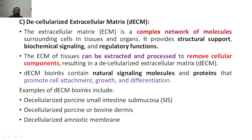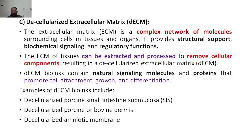dECM provides structural support, biochemical signaling, and regulatory functions. The ECM of a tissue can be extracted and processed to remove cellular components, resulting in decellularized extracellular matrix. This dECM bioink contains natural signaling molecules and proteins that promote cell attachment, growth, and differentiation.